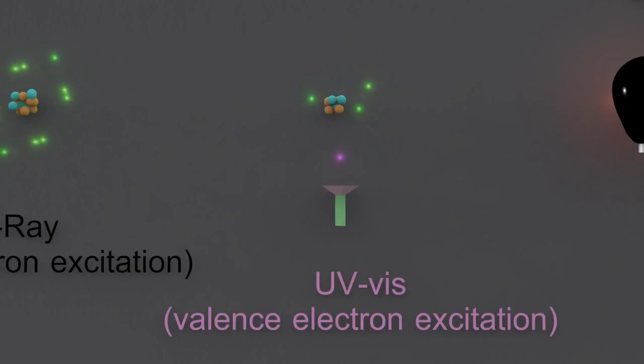UV visible excites the valence electrons to higher energy levels, and when they drop back down again they release a photon, giving information about the valence energy levels.